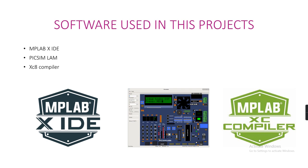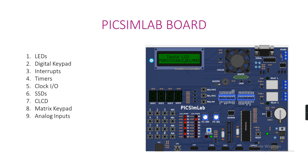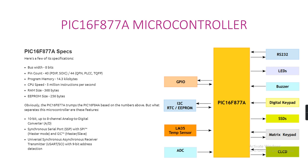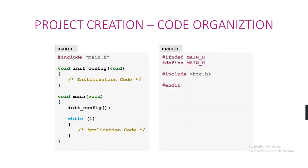The software used in this project is MPLAB X IDE, PIXIM Lab, and the XC8 compiler. The PIXIM Lab board features LEDs, a digital keypad, interrupts, timers, clock, I/O, SSDs, CLCD, matrix keypad, and analog inputs. The microcontroller used in this project is the PIC16F877A. Some of its specifications: bus width is 8 bits, pin count is 40/44, programming memory is 14.3 KB, CPU speed is 5 million instructions per second, RAM size is 368 bytes, and EEPROM size is 256 bytes.